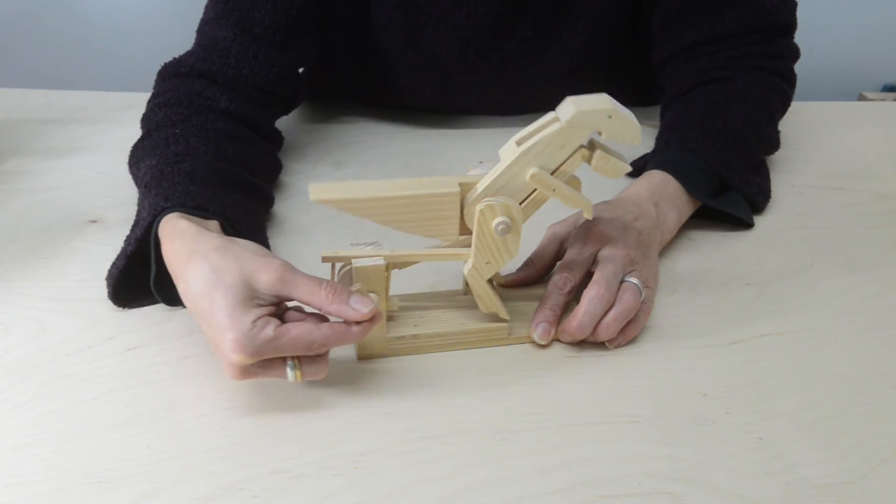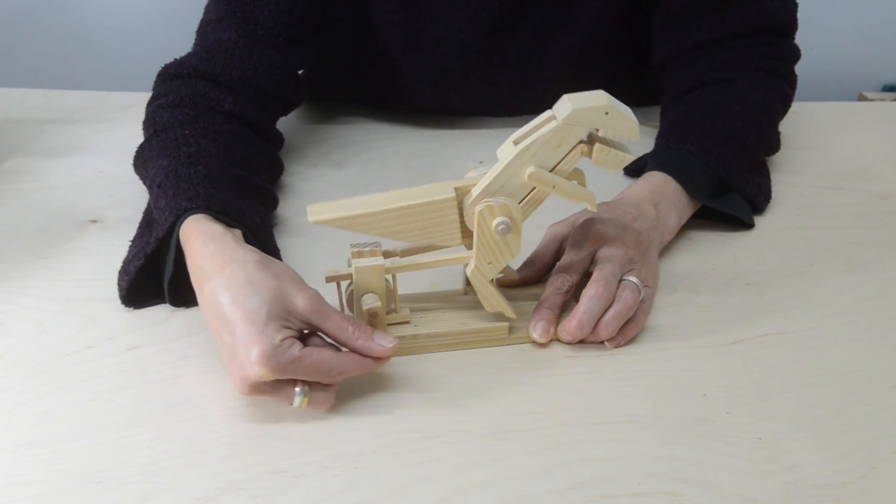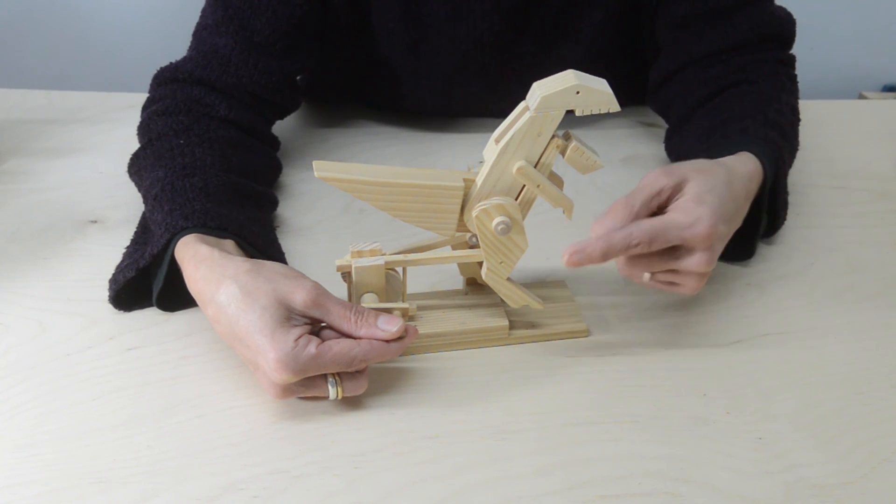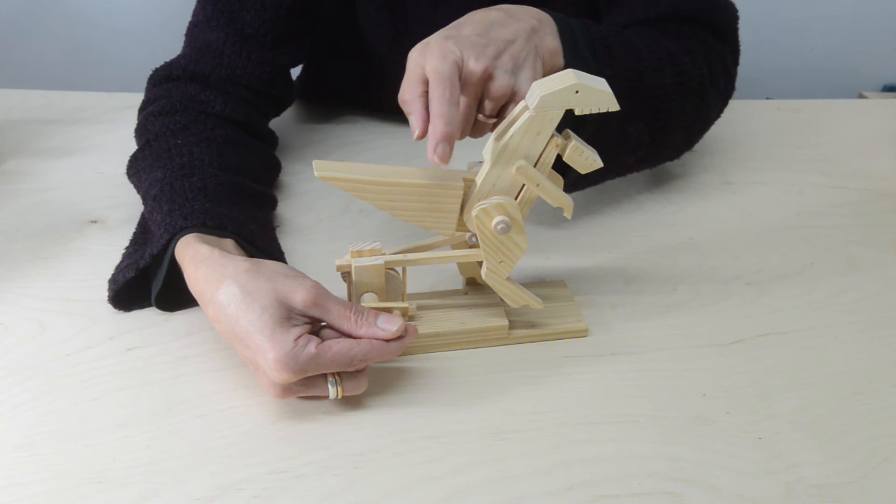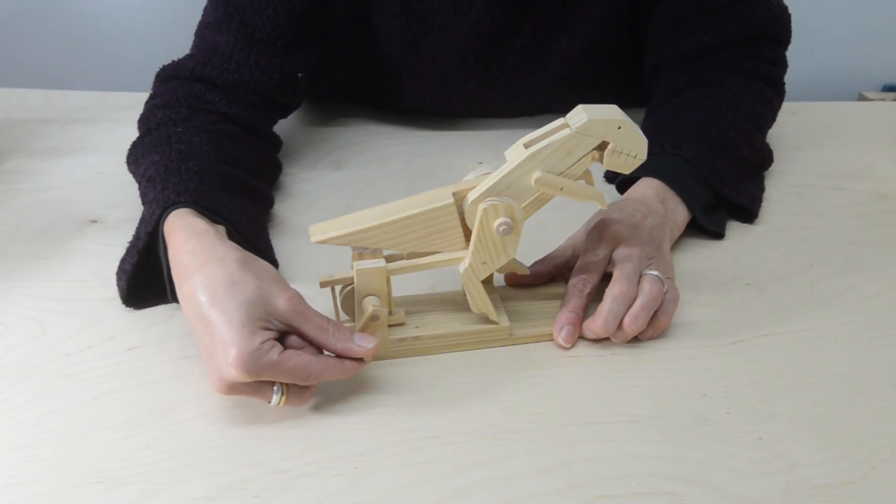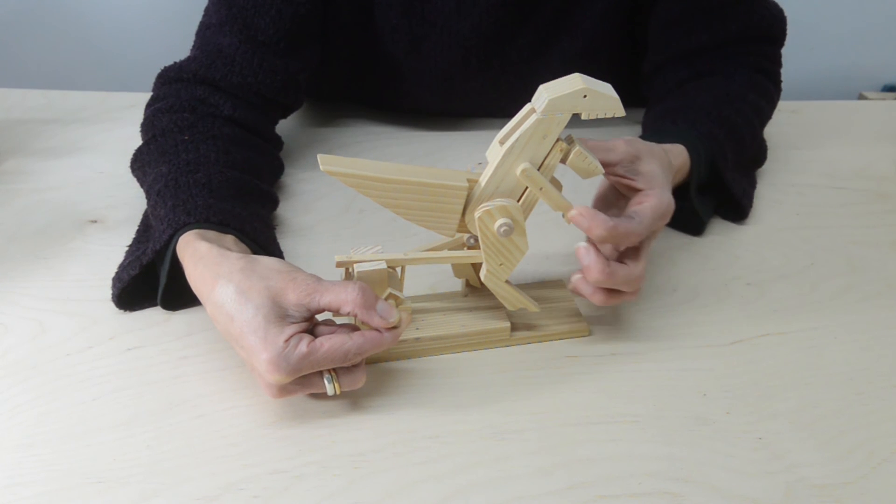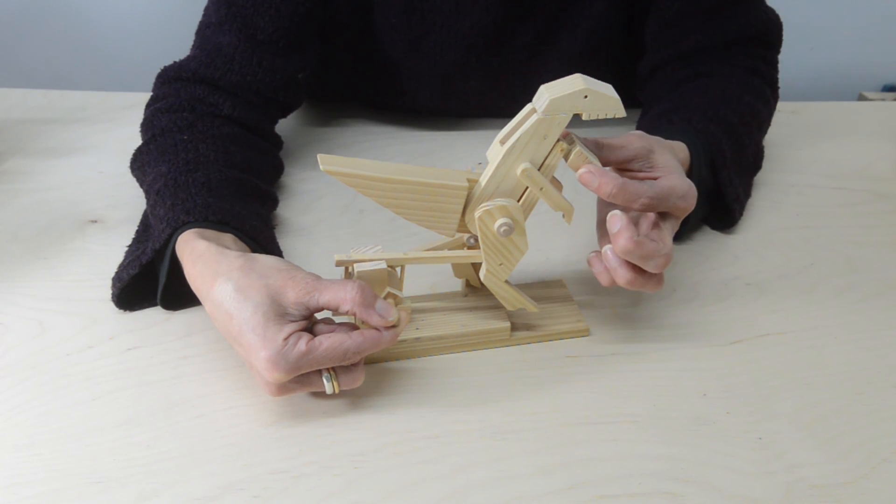Now the linkages in this T-Rex model are his own body parts, so his front leg, his neck pieces and his body all form an arrangement of linkages. So as the head pulls back, this other neck piece pulls the jaw down.